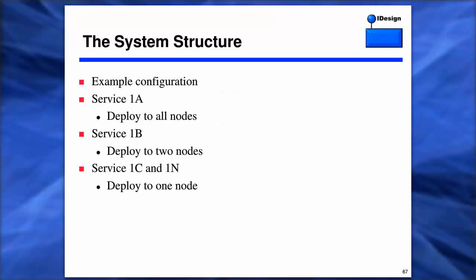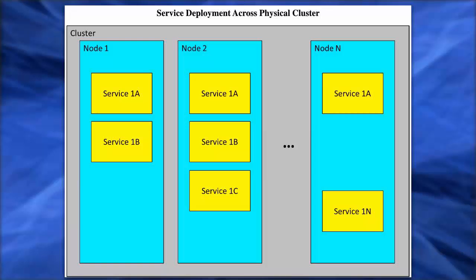The service fabric will take your services and applications and automatically deploy them across the nodes in your cluster. Each service, ideally, is hosted in a separate process or container, and the fabric uses your configuration to determine service placement. There's simple configuration for that, as well as more advanced capabilities for constraining placement to certain nodes and machine sets. For example, if application one wants service 1A deployed to all nodes, service 1B to only two nodes, and service 1C and 1N to only one node, the fabric may lay them across the physical nodes within the cluster accordingly. The service boundary is the unit of scale.